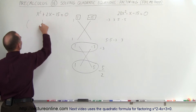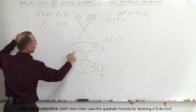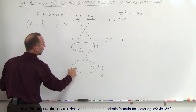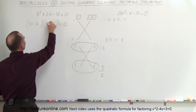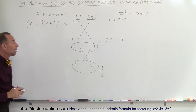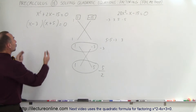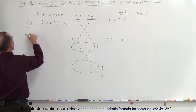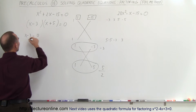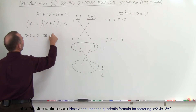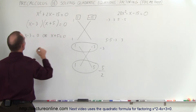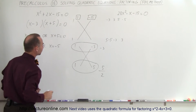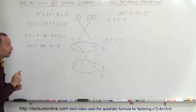So we can write it as (x minus 3) and (x plus 5). That's how we use the FOIL method to factor a problem like that. Now we go ahead and solve the quadratic equation. When you multiply these two together you get 0, which means either x minus 3 equals 0 or x plus 5 equals 0. Therefore x must equal 3 or x must equal negative 5.